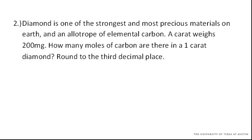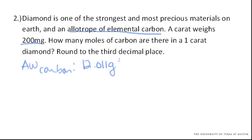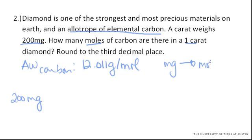What about the next one? Diamond is one of the strongest and most precious materials. It's an allotrope of elemental carbon — that just means it's a form of carbon. We're told that a carat weighs 200 milligrams. How many moles of carbon are there in a carat, rounded to the third decimal place? We know we're working with elemental carbon, so we can use the atomic weight of carbon from the periodic table, which is 12.011 grams per mole. We need to go from milligrams to moles.